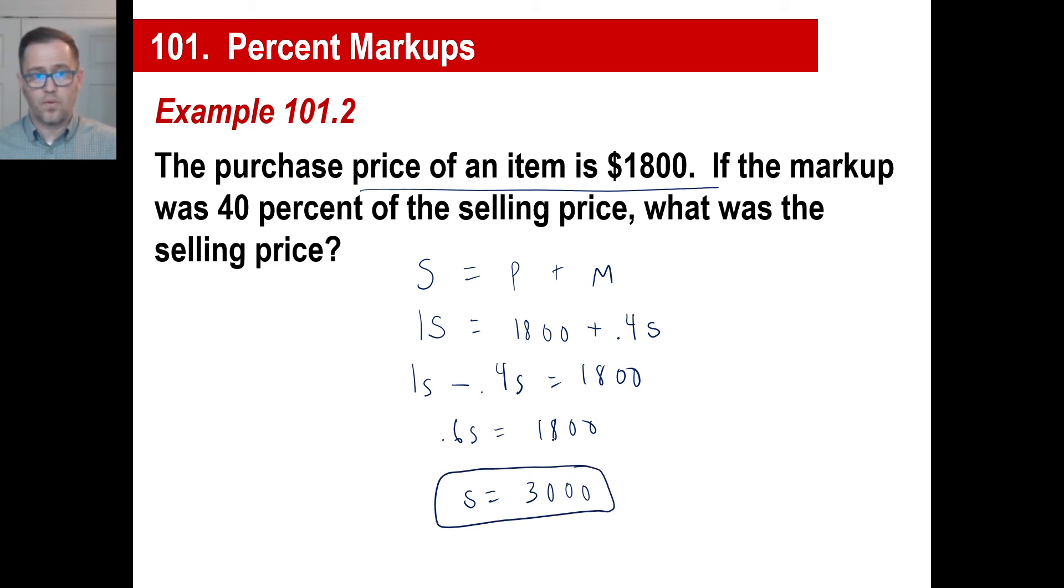If you do the arithmetic or put it in your calculator, the selling price will be $3,000. Now, are we correct? What's the markup then? If we buy it for 1,800 and sell it for 3,000, it's 3,000 minus 1,800, which is 1,200. Is 1,200, which is the markup, 40% of the selling price? You can put this over 3,000: 1,200 divided by 3,000 equals 0.4. It sure is.